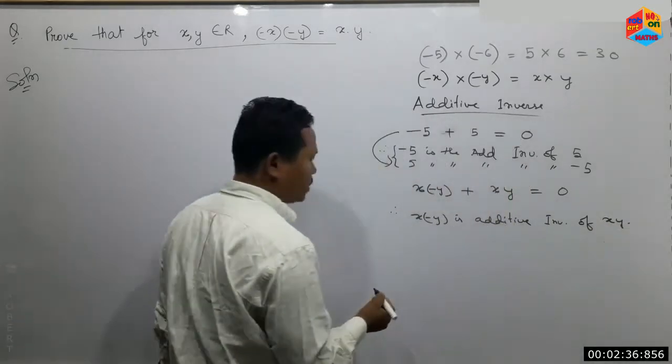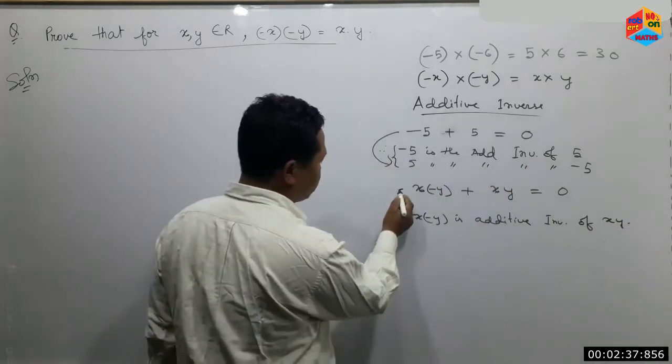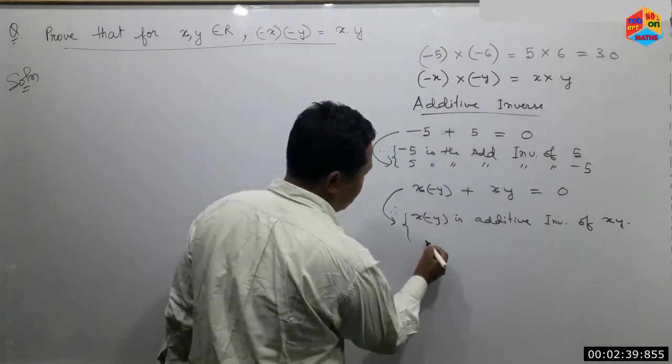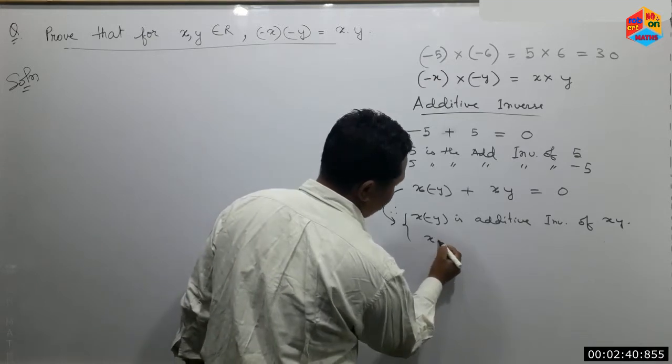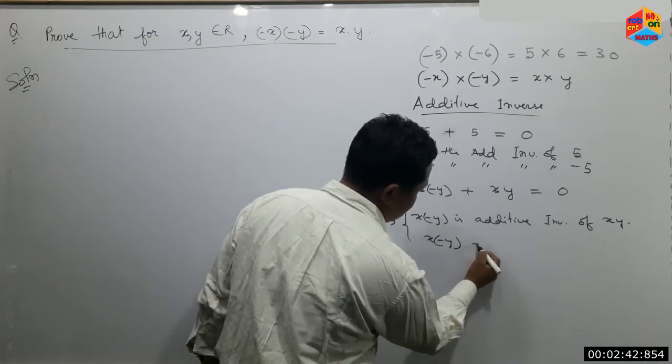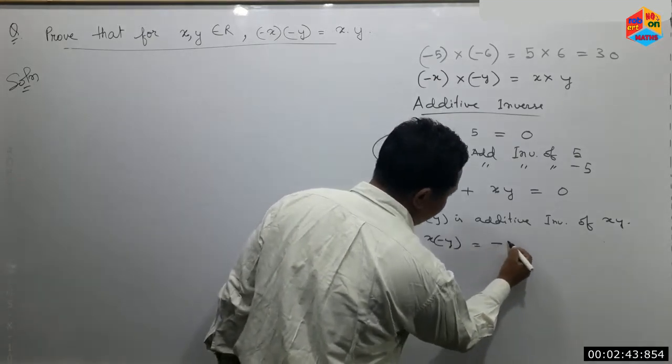Remember, x minus y over z is the additive inverse of xy, and it is the additive inverse of xy.